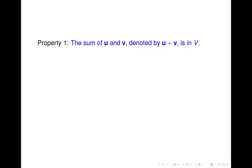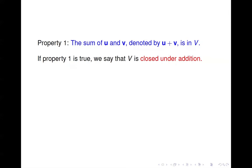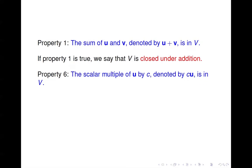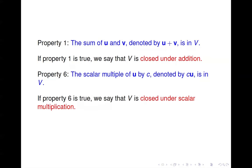Going back to properties one and six: property one says if you take any two vectors from the set and compute their sum, it is also in the set — if that is true, we say the set is closed under addition. Property six says if you take a scalar multiple of a vector in the set, the result is also in the set — if this is true, we say the set is closed under scalar multiplication. Keep those terms in mind.